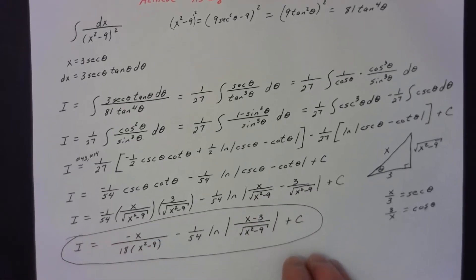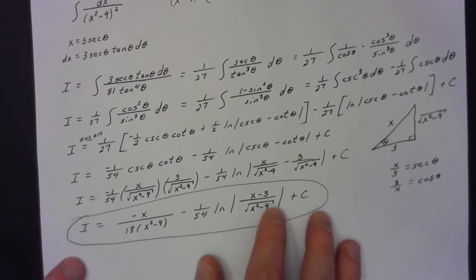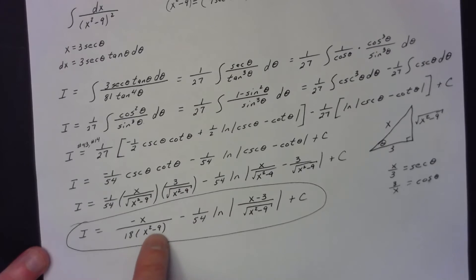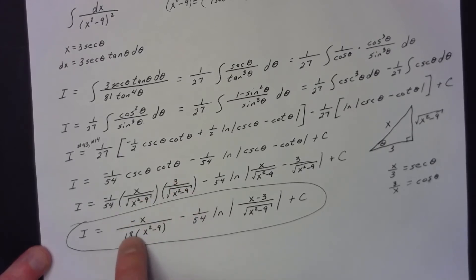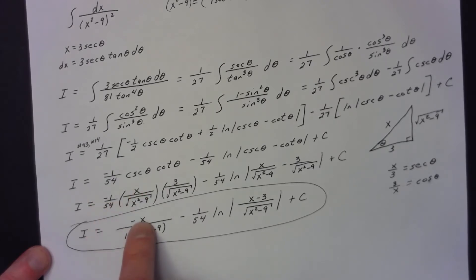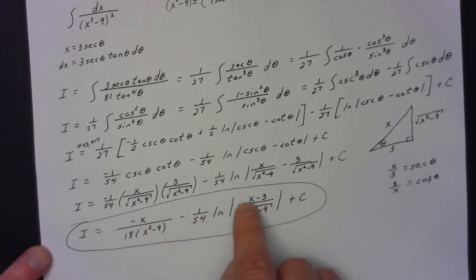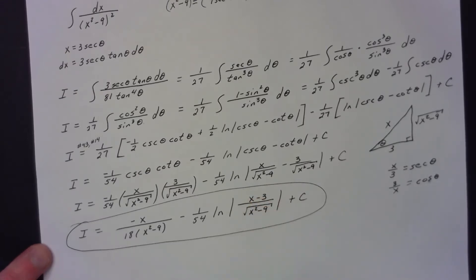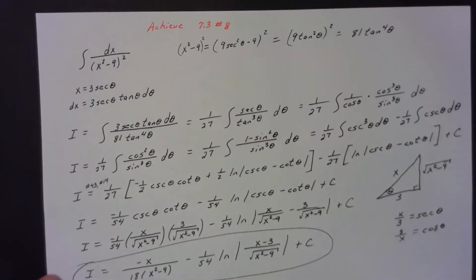It's extremely important to simplify. The two square roots multiply together to give (x² − 9) in the denominator. 3 over 54 reduces to 1/18, leaving a factor of negative x in the numerator. For the second term, keep the common denominator and subtract the numerators to get (x − 3) inside an absolute value. Don't forget the constant of integration. At that point, you're done with problem 8.